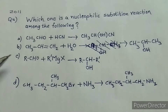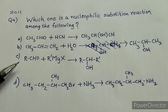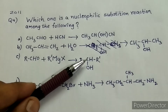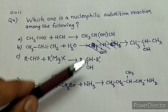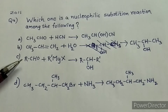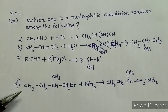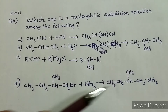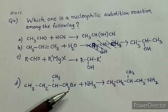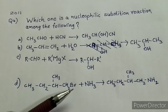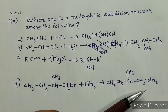Therefore, reaction B is an addition reaction and not a nucleophilic substitution reaction. In reaction C, the reactant is RCHO. The same atoms are seen on the product side as well, meaning nothing is removed from the reactants. Therefore, this is not a nucleophilic substitution reaction. In reaction D, the bromine atom is present on the reactant side, but on the product side, bromine is absent and in its position the NH2 group is substituted.